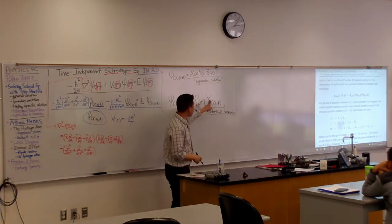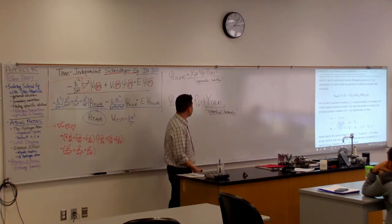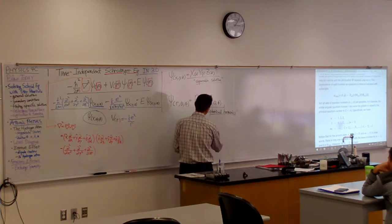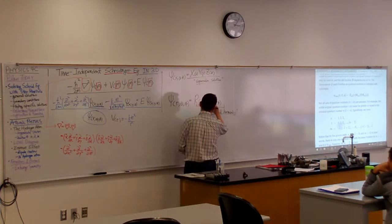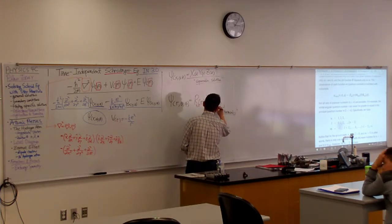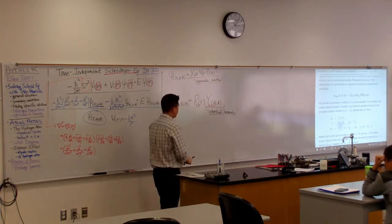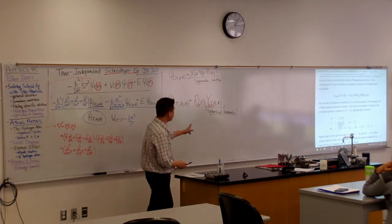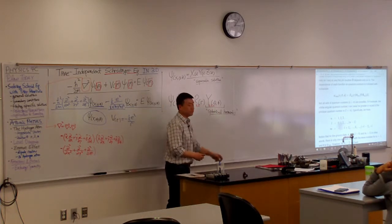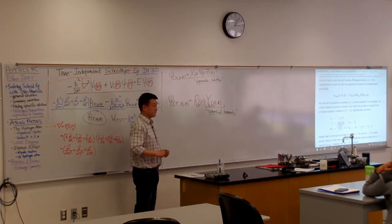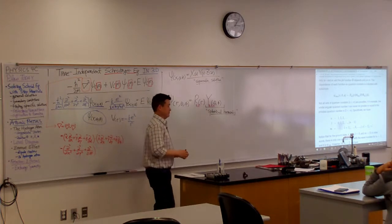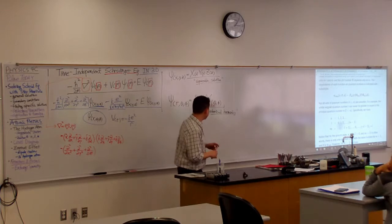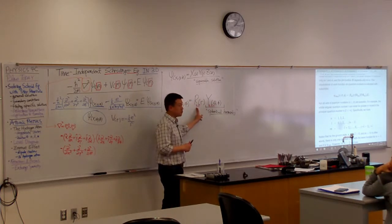So when you look at this radial function, there are going to be two parameters that characterize it, N and L. And when you look at the spherical harmonics, it will be characterized by all three quantum numbers that we are going to introduce, N, L, and M. And I guess you've actually seen one of these three quantum numbers before. Do any of them look familiar? N, yeah.